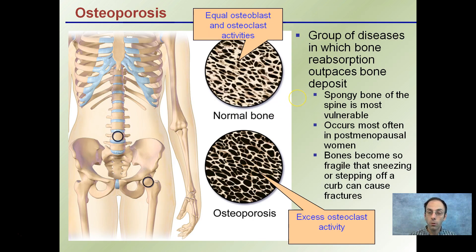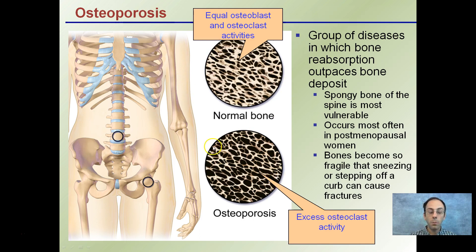Osteoporosis is actually a group of diseases in which bone reabsorption outpaces bone deposits. Remember, bone is constantly being broken down and repaired. In this case, it's being broken down at a greater rate than it's being repaired. They should be about equal to maintain normal bone. Here we have clearly excessive osteoclast activity — an excessive amount of bone being broken down. In normal bone, osteoblast and osteoclast activity are equal; the rate of breaking down equals the rate of rebuilding.